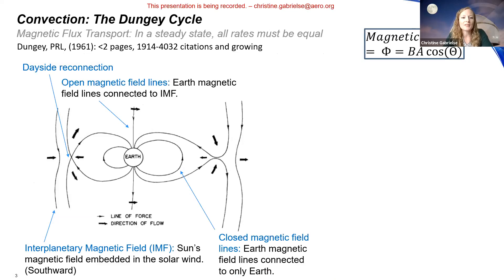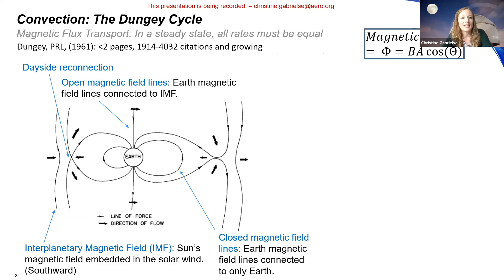You cannot talk about convection without talking about the Dungey cycle. First we should define convection — often when we're talking about convection, we're talking about magnetic flux transport.